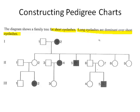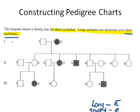Before we assign genotypes, we need to give them letters. Using E from eyelashes: long eyelashes being dominant is capital E, and short eyelashes is lowercase e. We know that for the recessive trait — short eyelashes — to show, an individual must have both alleles as lowercase e. So all the coloured-in individuals will be homozygous recessive (ee) for short eyelashes.